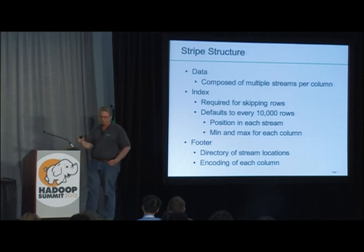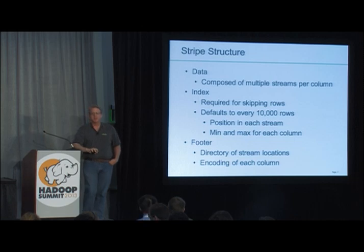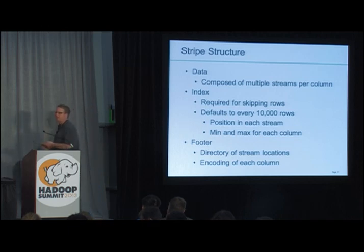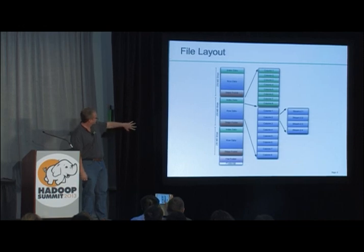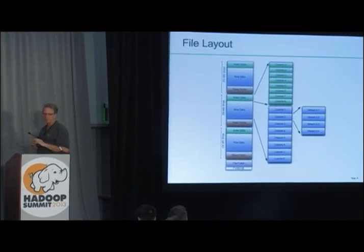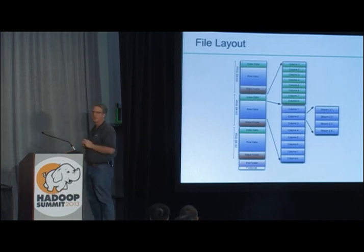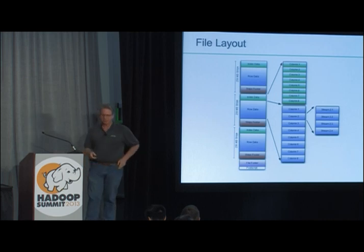Each stripe has three pieces: the data section, an index, and a stripe footer. The index is baked into ORC — by default, an index entry is created every 10,000 rows. It's typically less than 1% of total file size, but lets you jump to a particular row quickly. It also stores statistics like min and max for each 10,000-row section per column. The stripe footer gives the directory of stream locations and the encoding for each stream.